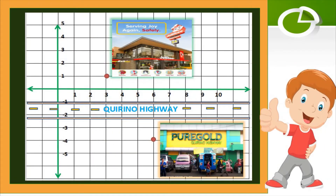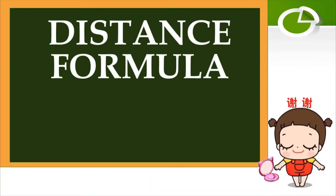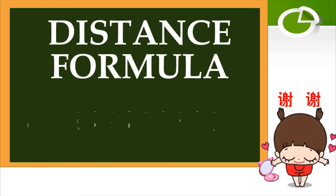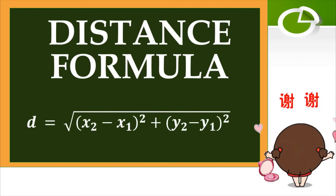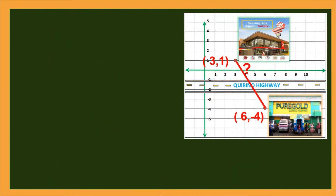Next, what is the distance from (0,31) to (0,6-4) on the coordinate plane? Or given the illustration, what is the distance from Jalibi to Pure Gold, or from Pure Gold to Jalibi? In this case, we will be using the distance formula. The distance formula is defined by the equation: D is equal to the square root of the square of the quantity x₂ minus x₁, plus the square of the quantity y₂ minus y₁.